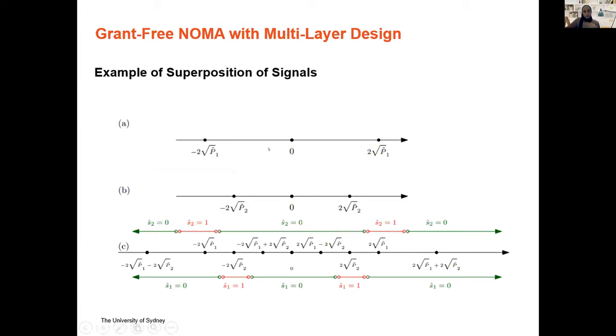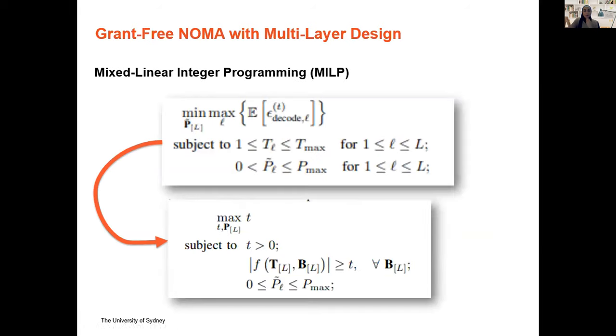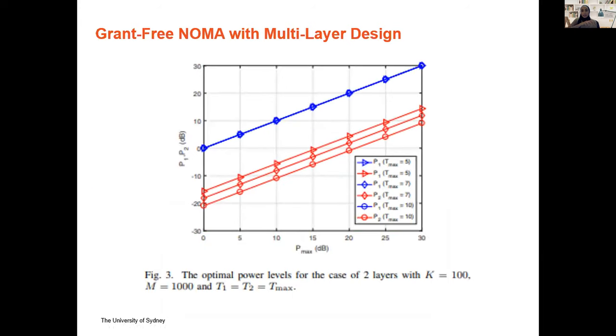In our initial work, the first time we introduced this multi-layer design, we focused on just optimizing the powers. We found that to be quite simple through a nice mixed integer linear programming. That's when we first introduced the system. In the second part, what we try to do through deep learning is do the coding part of things, the encoding and the decoding.